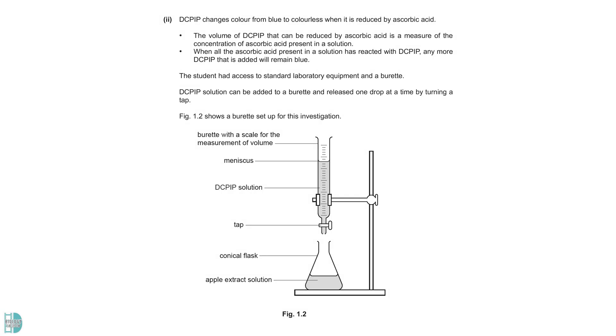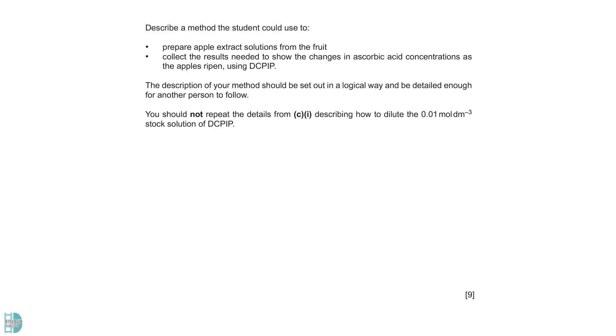Step 2 shows you how to measure the concentration of ascorbic acid in a sample by using DCPIP. The greater the volume of DCPIP needed for the titration, the greater the concentration of ascorbic acid in the apple extract solution. You are asked to describe a method the student could use to prepare apple extract solutions and collect the results needed to show the changes in ascorbic acid concentrations as the apples ripen. In a design experiment question, you must describe the three variables, the necessary procedure, reliability, and safety precautions.